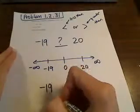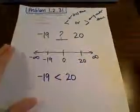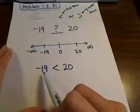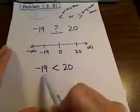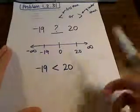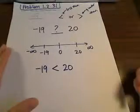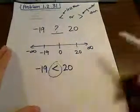So we would just say here that negative 19 is less than 20. You can read that a couple of ways. You can read it as negative 19 is less than 20, or you can read it as 20 is greater than negative 19. We always generally read from left to right when we're reading mathematics, same as we read the English language. So this would just be that symbol right there.